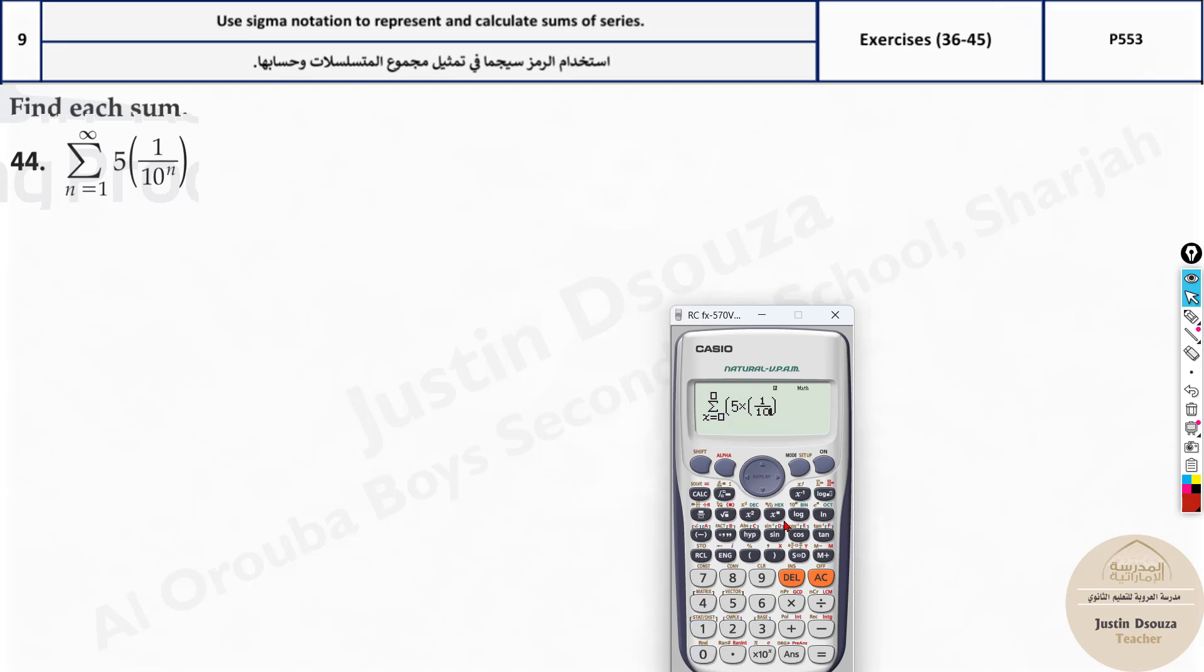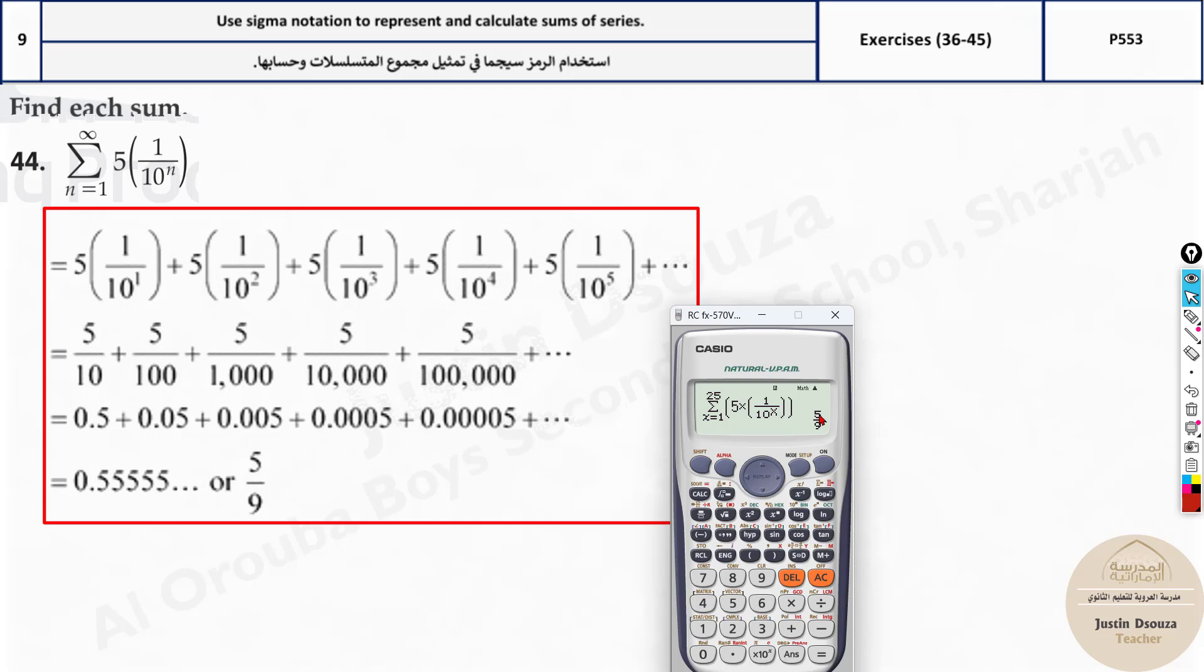1 divided by 10 to the power x, close the bracket. Because there's one already open and now another one was opened by you, so you need to close it properly. And now where does it start? It starts at 1. But what is infinity exactly? It's a huge number, right? Let us start with 25. Your answer is 5 by 9. Yes, that's it.